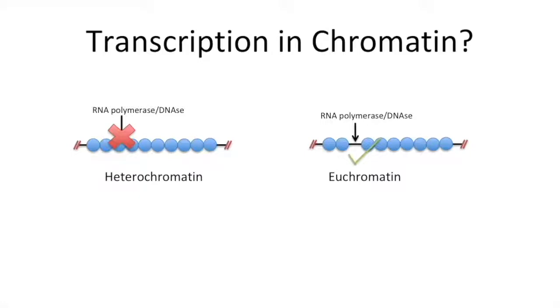However, chromatin that is being actively transcribed has nucleosome-free regions and is considered to be DNase-sensitive. These regions are called hypersensitive sites and tend to be control regions.